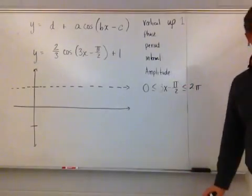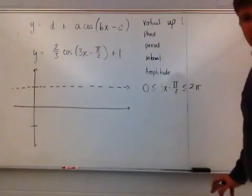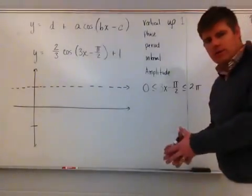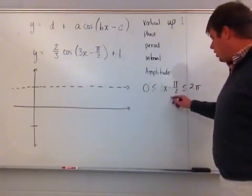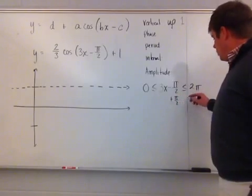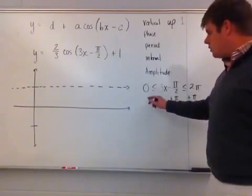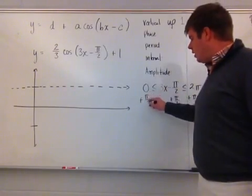What I now need to do is solve so that I have the new domain where x values go from here to here. I'm just going to solve, so plus pi over two, plus pi over two. This is just solving a compound inequality.